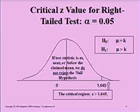The critical z-value for a right-tailed test when alpha is 5% is 1.645. The z-value has to be greater than this value in order for me to reject the null hypothesis.